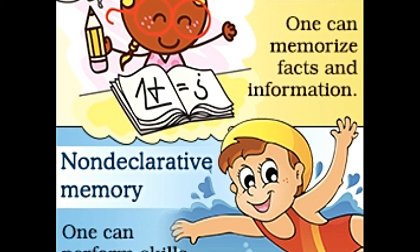Priming is a kind of implicit memory that deals with stimulus and response in an individual. The human mind contains some information registered permanently, so when a person receives a stimulus that shares a response with another stimulus, the mind tends to produce the response associated with that other stimulus.